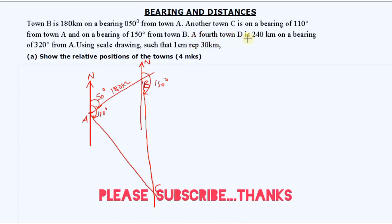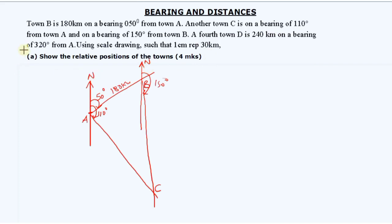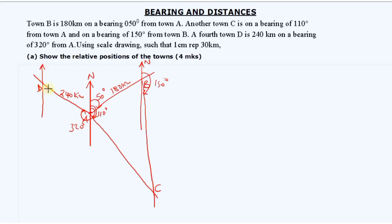A fourth town D is 240 kilometers on a bearing of 320 degrees from A. At A, we measure clockwise — this time it is 320 degrees — and town D is 240 kilometers away from town A. We'll have the true northing passing directly through point D. That is the sketch we are going to use to draw the scale drawing.